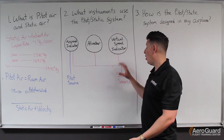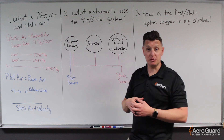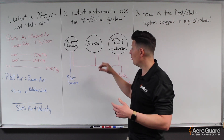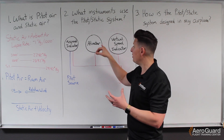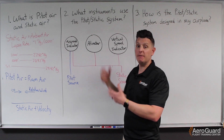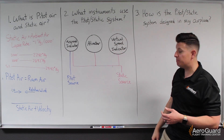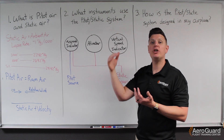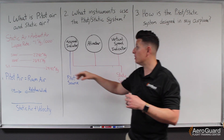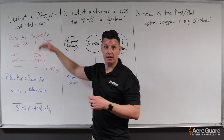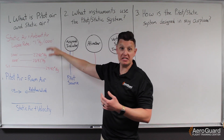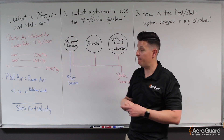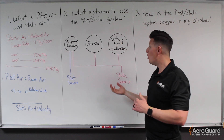The altimeter only utilizes the static source because, based on the lapse rate, we have identified increments of where pressures should be at. The altimeter is set up to interpret those static air pressures and depict the appropriate altitude. Finally, the vertical speed indicator also uses only the static source to measure our rate of change in static pressure. If the pressure is going down quickly, we know we're climbing rapidly. Opposite of that, if we were descending quickly, the vertical speed indicator would sense that pressure was increasing over time and indicate whether we are climbing or descending.